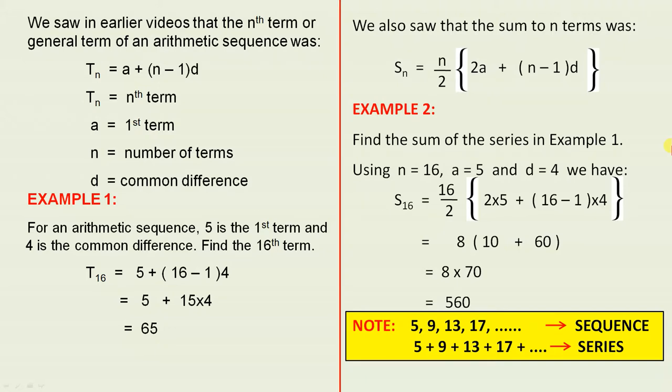Let's look at this example. For an arithmetic sequence, 5 is the first term and 4 is the common difference. Find the 16th term.